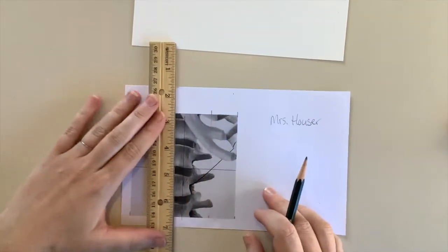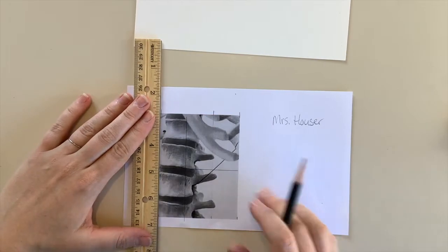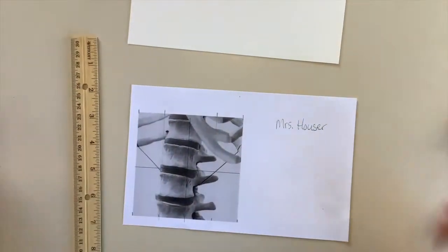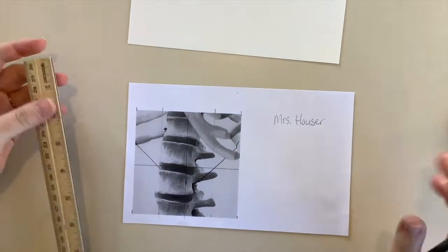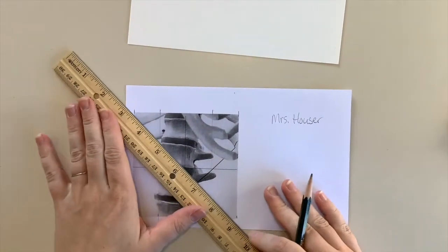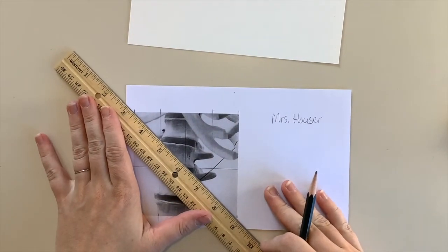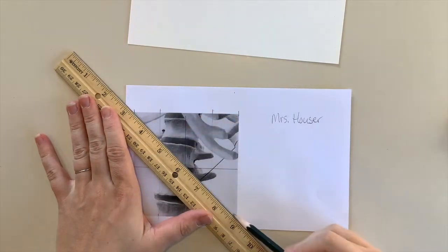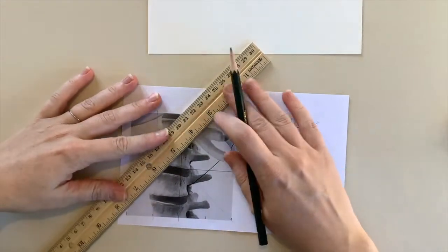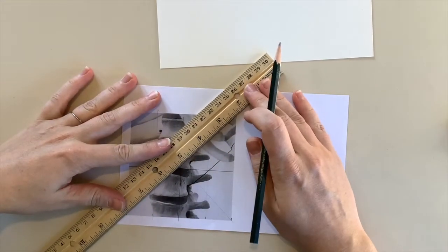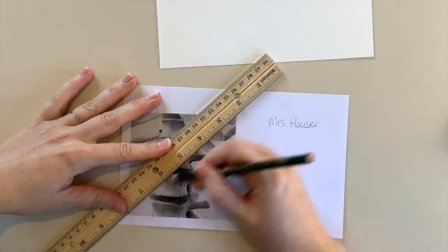The next step is to line up the ruler from the top tick mark to the bottom tick mark and draw a straight line. Another alternative way of doing the grid method instead of doing the vertical and horizontal lines is to take your ruler and line it up to each corner and draw the diagonals from each corner, as well as the central vertical and horizontal line.